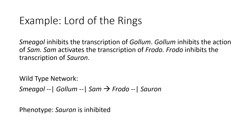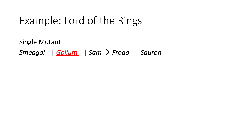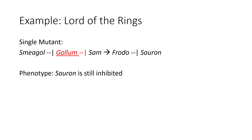Let's look at a couple of examples of how the network can change if mutations occur. If a mutation in Gollum occurs, like shown here, then Sam will not be inhibited. Frodo is still activated, and so Sauron is still inhibited. In this case, the resulting phenotype is the same — Sauron is inhibited.